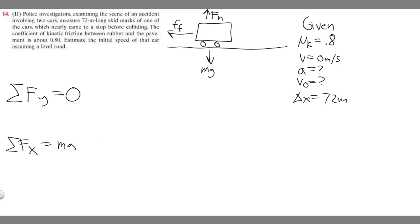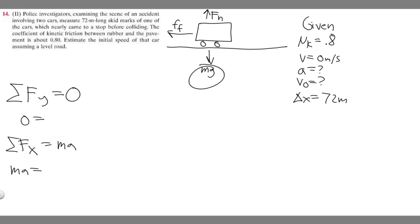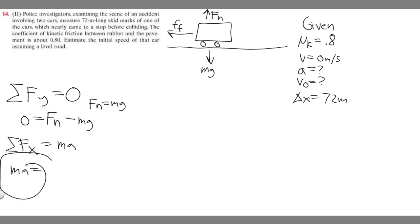Keep in mind the acceleration will be negative because we're slowing down, so the x-direction equation is negative ma. Writing out the forces: in the y direction, F sub n minus mg equals 0, which gives us F sub n equals mg. In the x direction, the only force is friction acting to the left, so it's negative F sub f equals ma, or rearranging, F sub f equals negative ma.